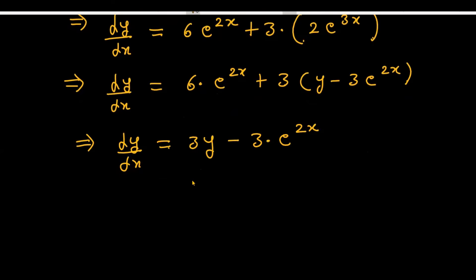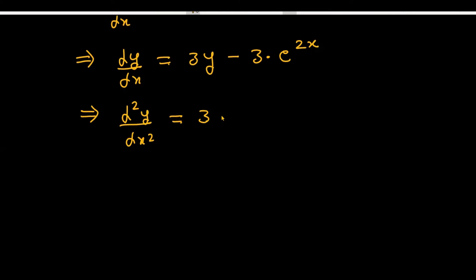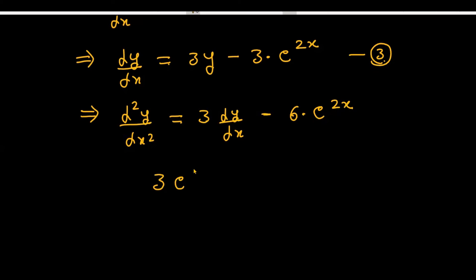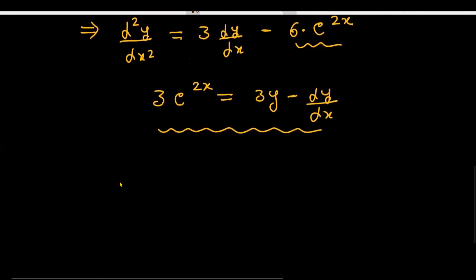Since we need to differentiate twice, let's differentiate once more. Differentiating dy/dx = 3y - 3e^(2x) gives d²y/dx² = 3(dy/dx) - 6e^(2x). We will now apply the same substitution management here.